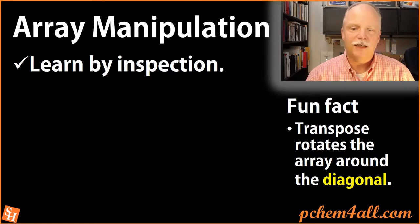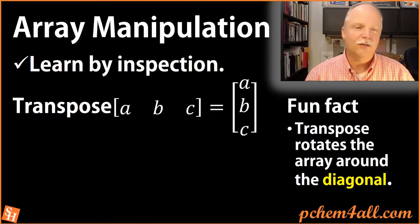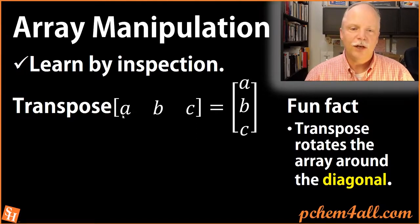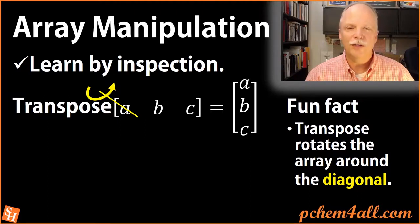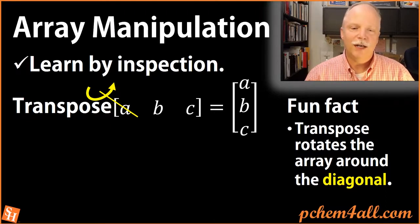The transpose function rotates the array around the diagonal. If we take the transpose of this row vector a, b, and c, we end up with a column vector of a, b, and c. The diagonal always starts with that first value, which is a. If we rotate around a as the pivot point, b and c go down below a and become a column.